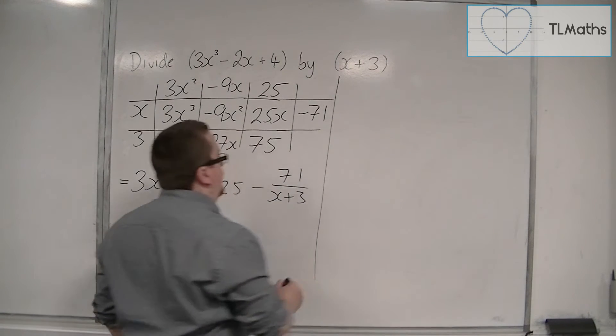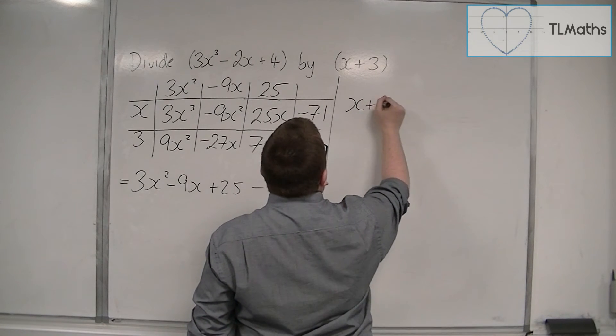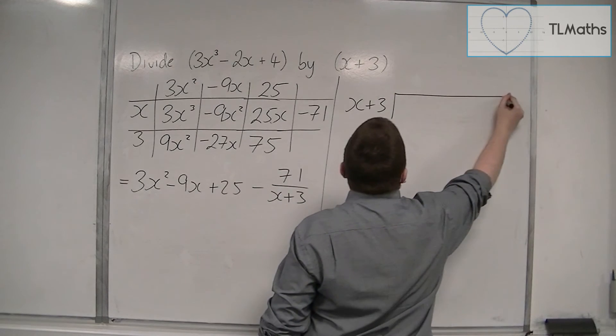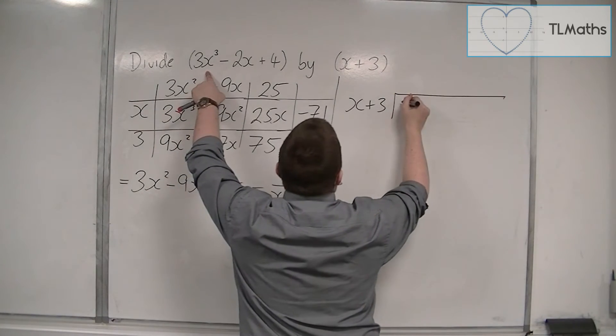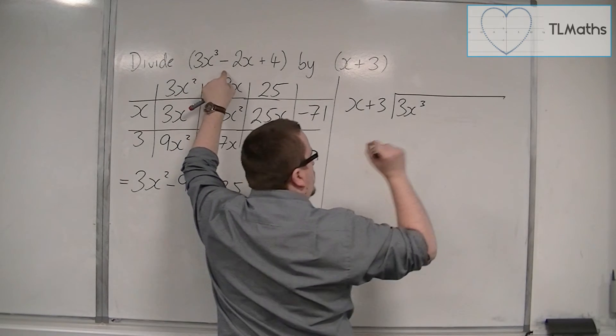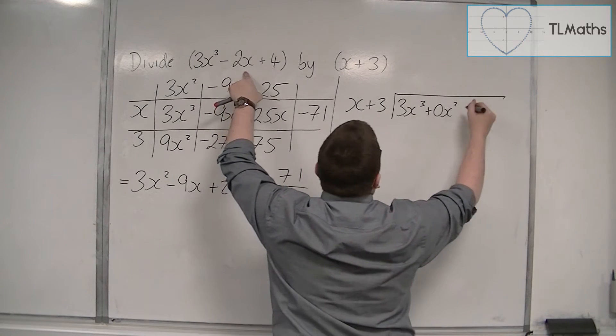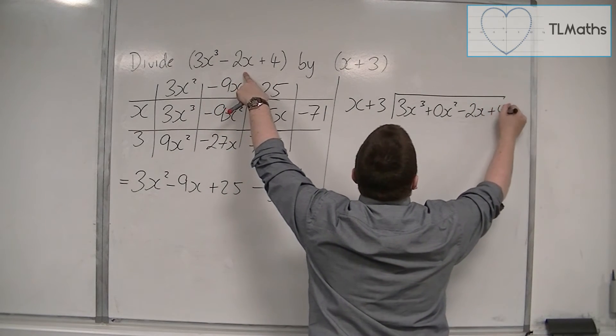Now, using long division, how this works is that I write x plus 3 and I'm going to be dividing 3x cubed. Now, there's no x squared term, but I've got to include it. So I've got to write 0x squared minus 2x plus 4.